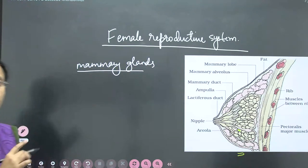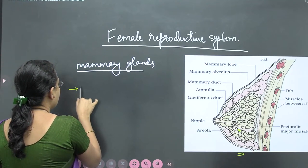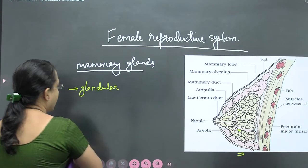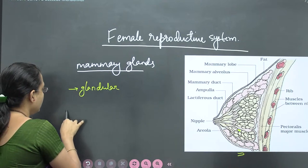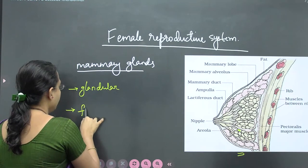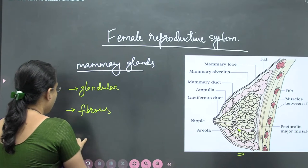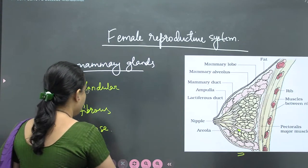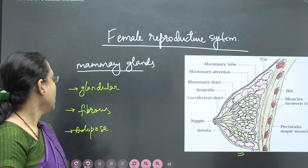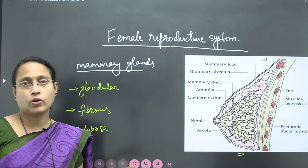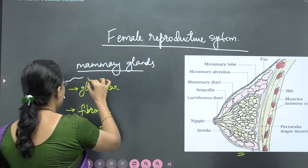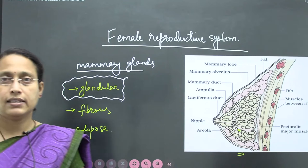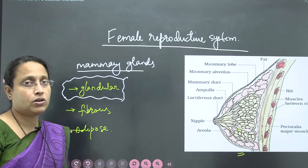Mammary glands have two portions. One is the glandular part, the second is the fibrous part, and the third is the fatty part of the mammary glands. The most important part according to the NCERT is the glandular part of the mammary glands, which I will now explain.